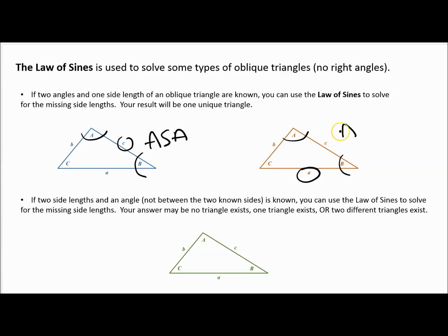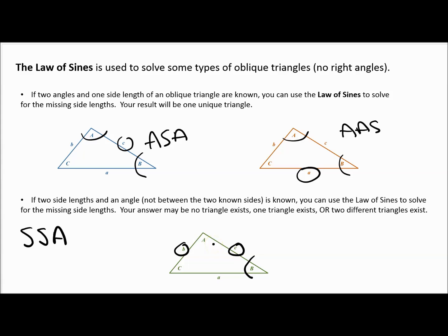Those are what I call the easy cases. In this video we're going to talk about the more challenging case: when you know two side lengths and an angle that's not between the two sides. For example, knowing side B, side C, and angle A. That's called side-side-angle — you know two sides and the angle is not between them.